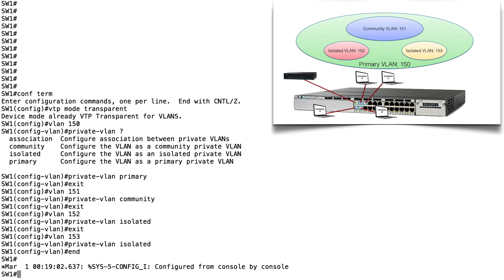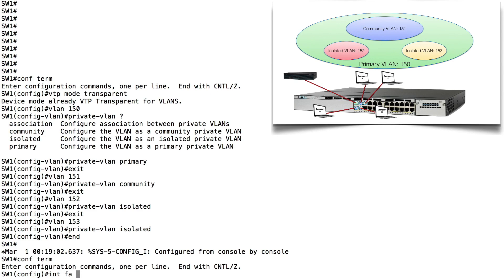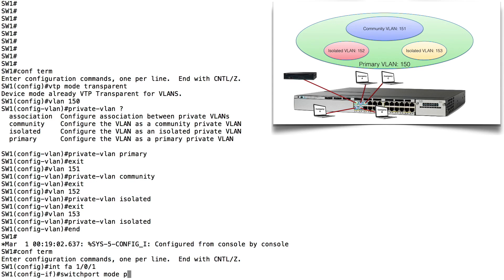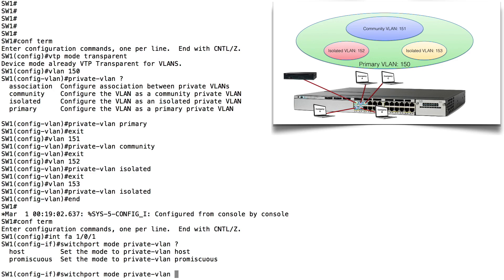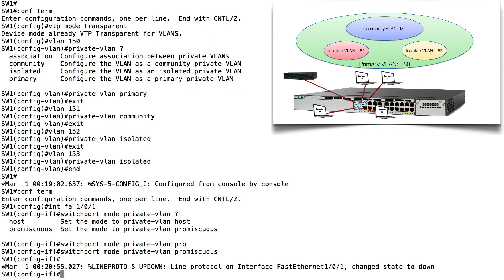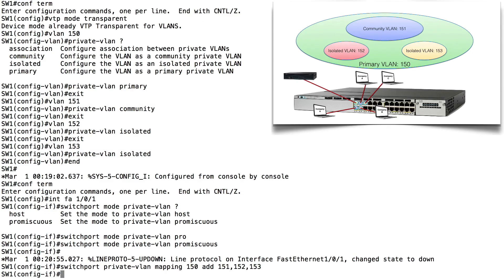Next, we go into the individual ports and specify whether they are promiscuous ports or host ports. Let's start with our promiscuous port on FastEthernet 1/0/1. We say: switchport mode private-vlan promiscuous. Now we associate VLANs with this promiscuous port: switchport private-vlan mapping 150 add 151,152,153. This promiscuous port can now communicate with all of those VLANs.